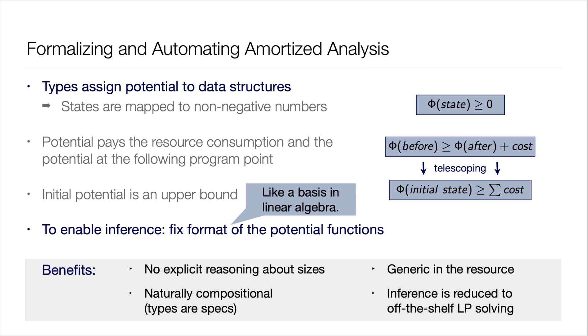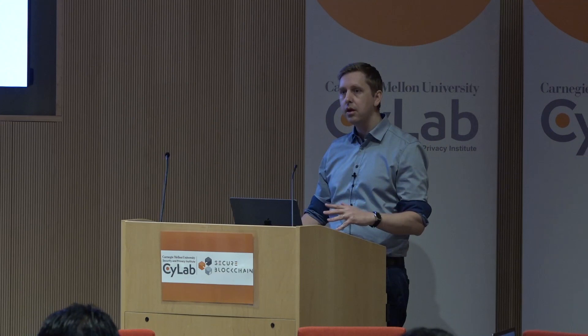Why do the analysis in this manner? There are multiple benefits. First, you never have to reason explicitly about the sizes of data structures — that's all taken care of by the potential. The analysis is also naturally compositional: if you have a bound for function F and a bound for function G, you also have a bound for the composition. The inference can be reduced to off-the-shelf LP solving, even for nonlinear bounds.